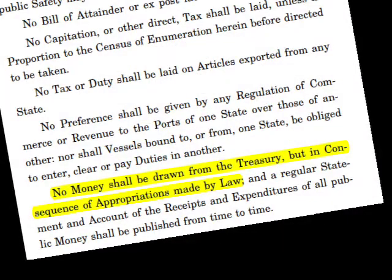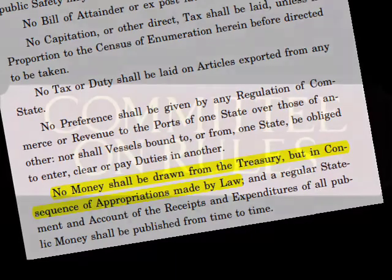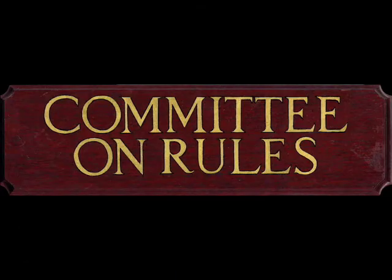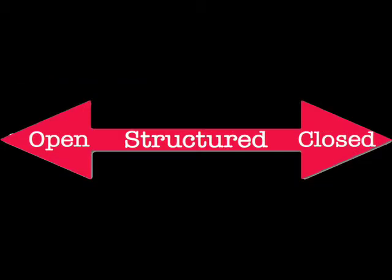An appropriations bill is a bill to provide funding for government programs. The Constitution makes it very clear that the government can't spend any money without an appropriation. The Rules Committee sets the terms of debate for bills in the House, including what amendments are debated, for how long, and in what order they're considered.